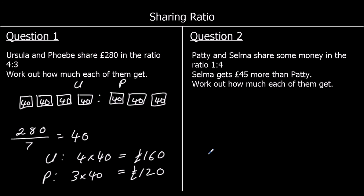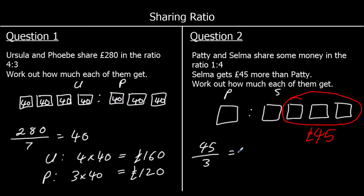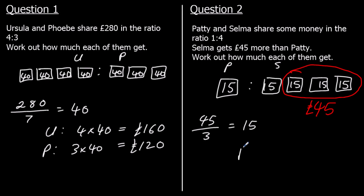Question two: Patty and Selma share some money in the ratio 1 to 4. Selma gets £45 more than Patty, so she's got three boxes more. These three extra boxes must be worth £45. So to work out how much is in each box, we do 45 divided by 3, which is 15. So each box has £15 in it. Patty gets one lot of £15, which is £15. And Selma's got four lots of £15, which is £60.